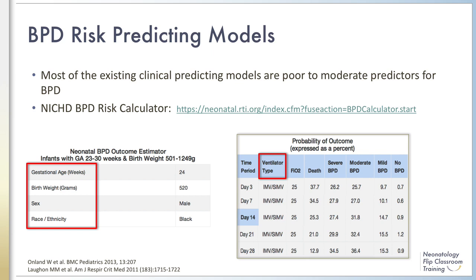External validation demonstrated that, except for two promising models, most existing clinical prediction models are poor to moderate predictors for BPD. One of these two models that showed good calibration was the NICHD BPD calculator.